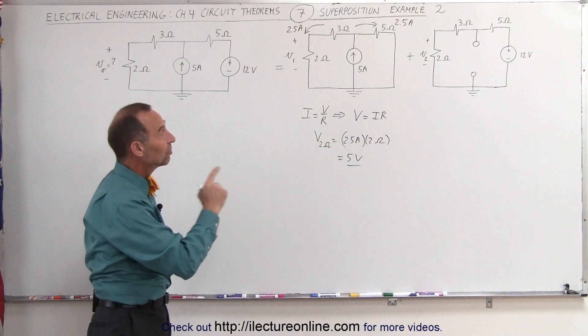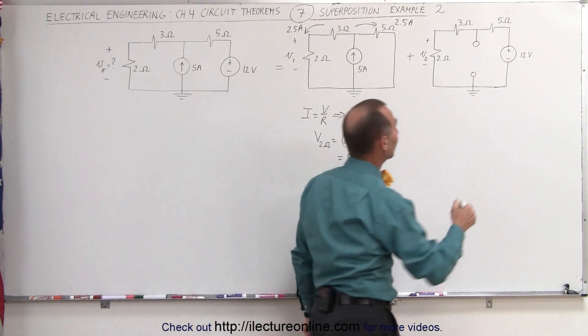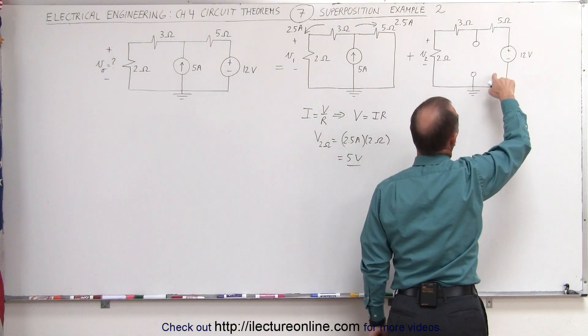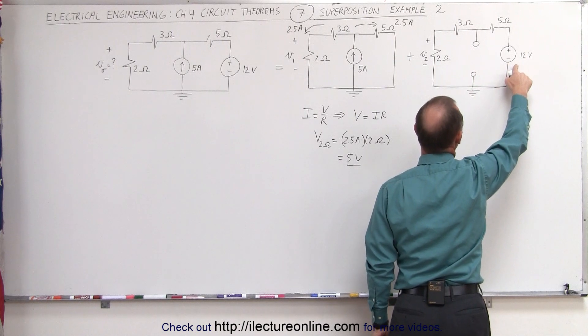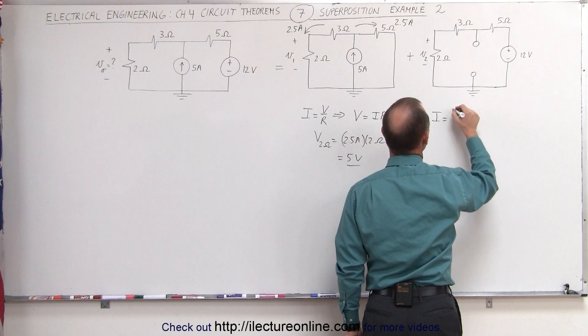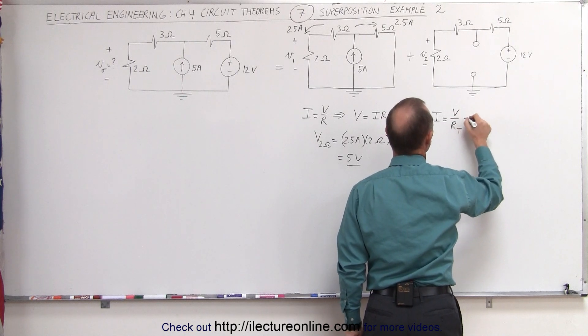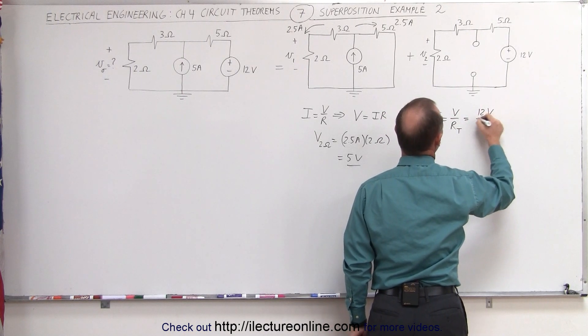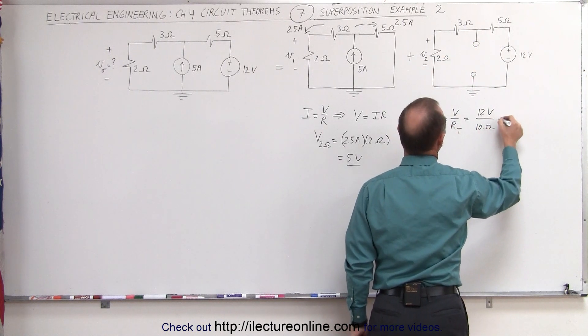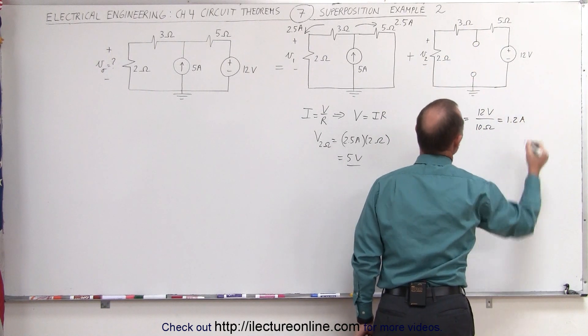Now we'll do that again with the second circuit. Notice in this case, we simply have a single branch or a single loop with a 12 volt voltage source, which means that current I will be equal to V divided by the total resistance that will be equal to 12 volts divided by 5 plus 3 plus 2, total of 10 ohms, which is 1.2 amps through the circuit.